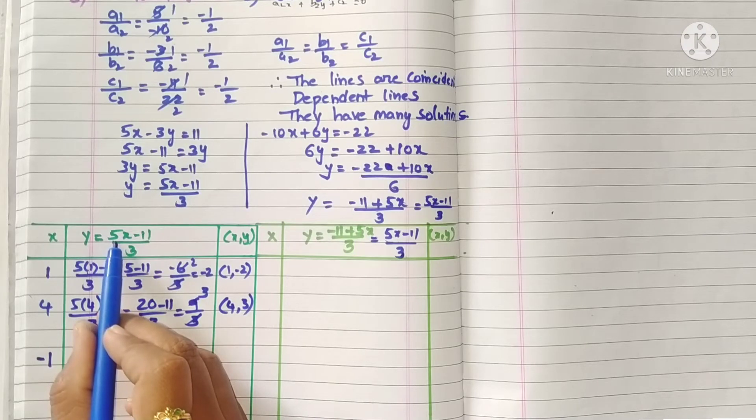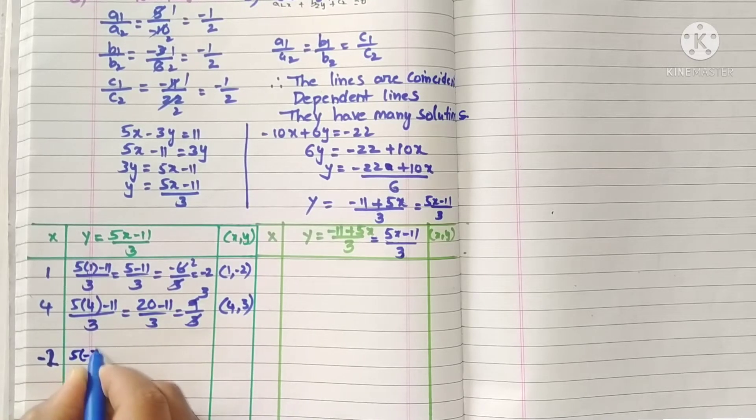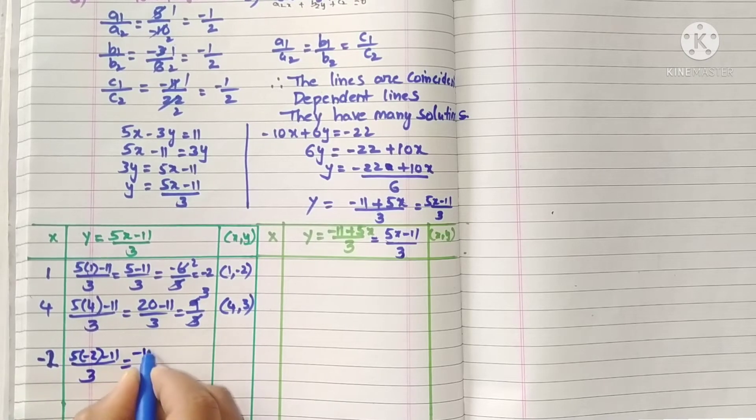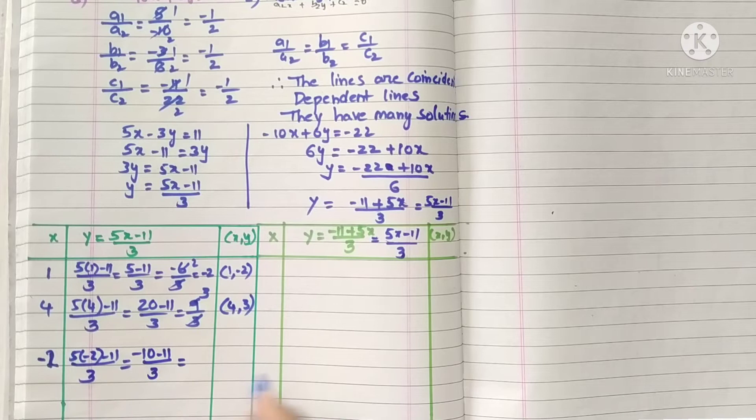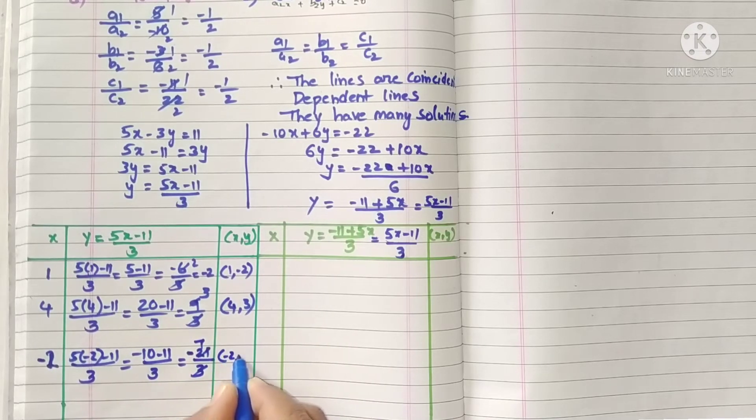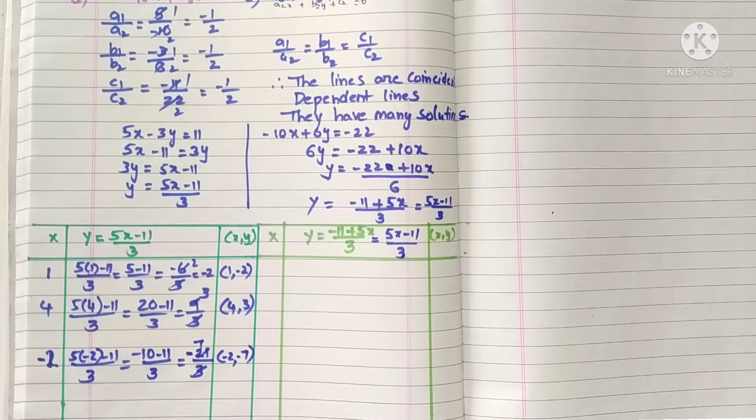Now we will take minus 2. 5 into minus 2 minus 11 by 3. Same sign, so add: minus 10 minus 11 by 3 is minus 21 by 3, which is minus 7. So x value minus 2, y value minus 7.